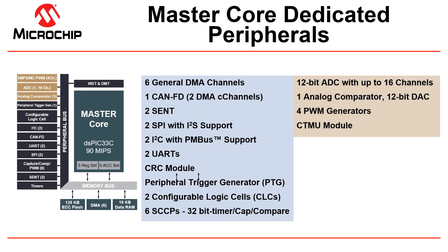The master core has several dedicated peripherals and features. The master has more communication interfaces than the slave core, and is equipped with a CAN-FD controller and other serial interfaces. The master core also has the peripheral trigger generator, configurable logic cells, and many other peripherals, making it better suited for communication or system monitoring tasks.